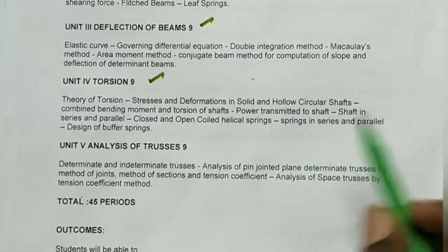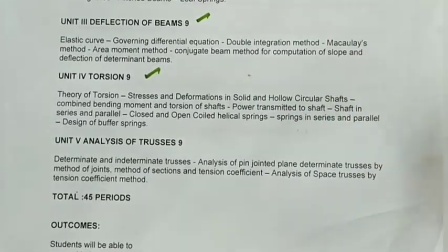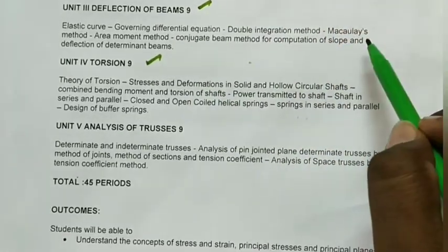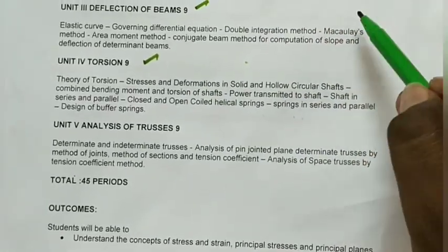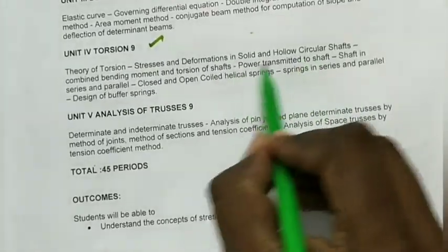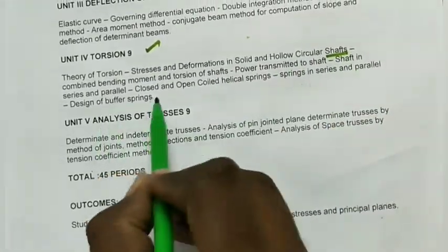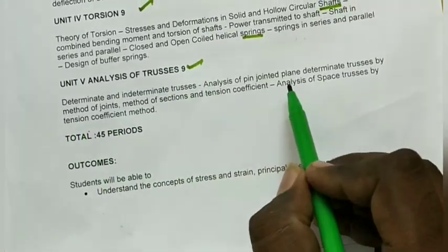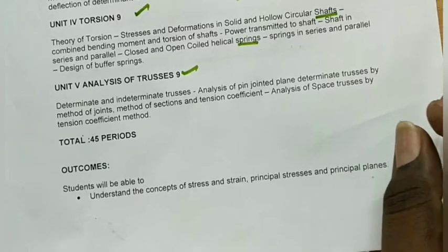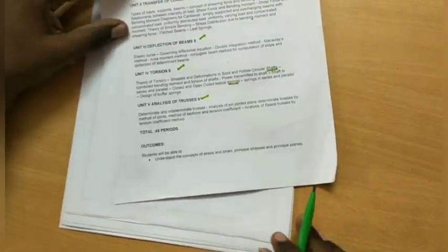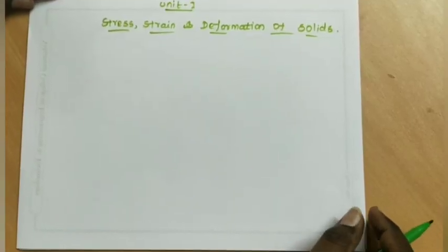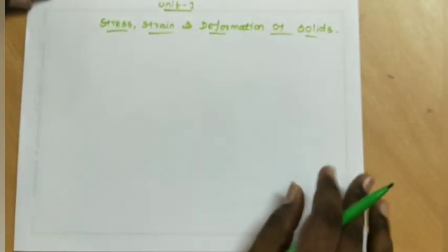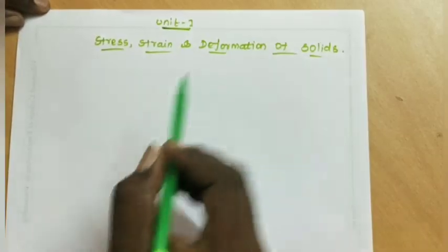Unit 5 covers Torsion. In Unit 3 we will try shear force and stresses. In Unit 4 is fully covered Torsion, and in Unit 3 we will try bars and beams. Let's go to the next unit for a small review.